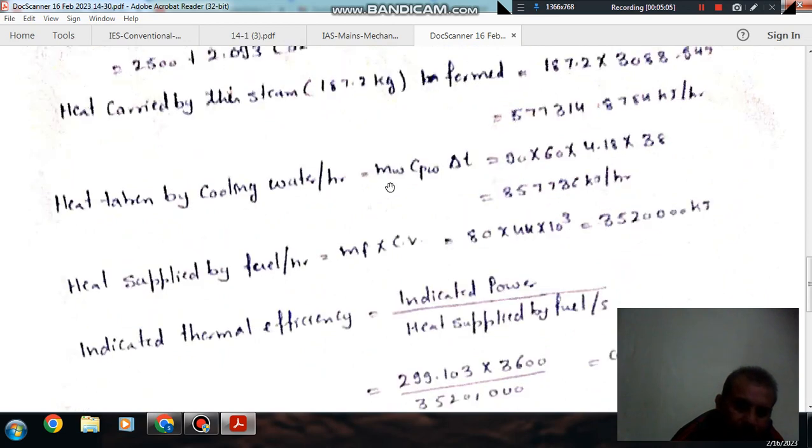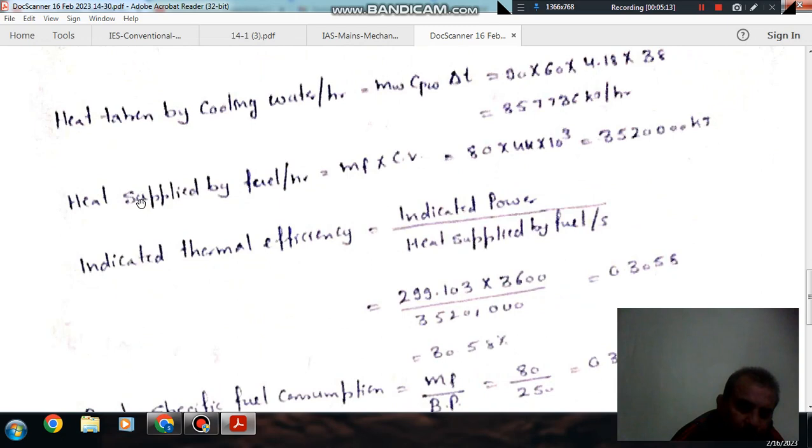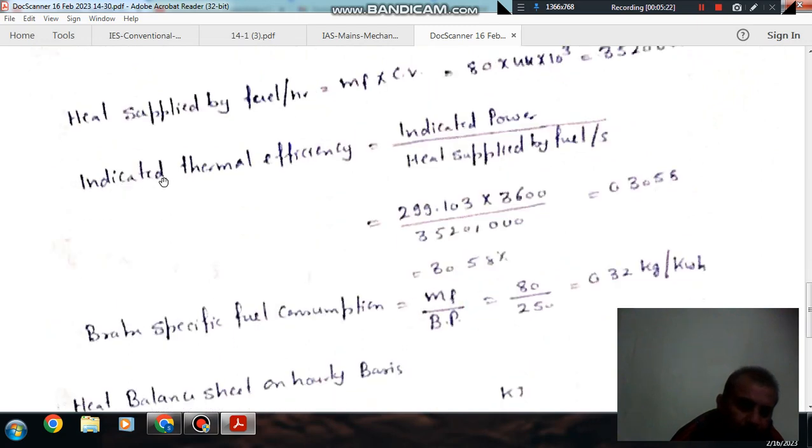Heat taken by cooling water is mass times Cp water times temperature rise equals 90 times 60 times 4.187 times 38, equals 857736 kJ per hour. Heat supplied by fuel is mass of fuel times calorific value, that is 80 times 44000, equals 3520000 kJ per hour. Indicated thermal efficiency is indicated power divided by heat supplied by fuel, which equals 0.3059 or 30.59 percent.